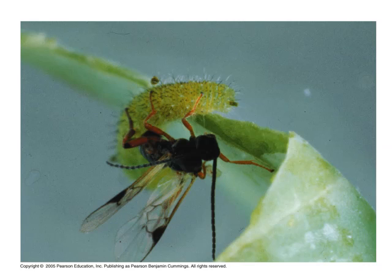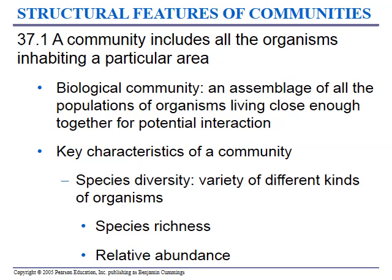A community includes all the organisms inhabiting a particular area. A biological community is an assemblage of all the populations of organisms living close enough together for potential interactions. Whether we see them interacting or not, if they're living close enough together, they can be having an effect on each other — whether it's a direct or indirect effect.